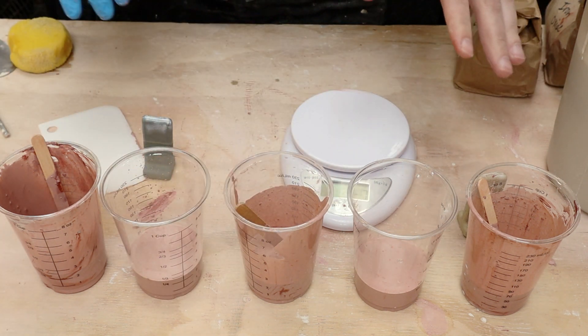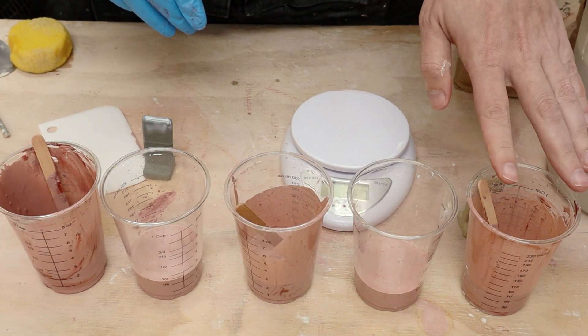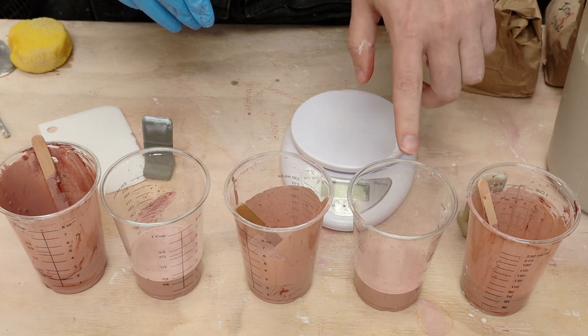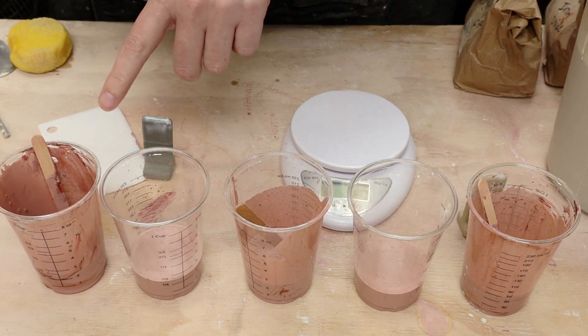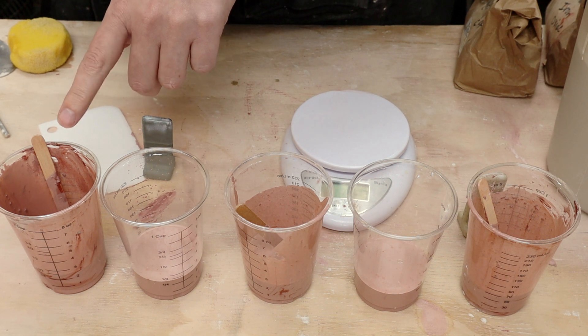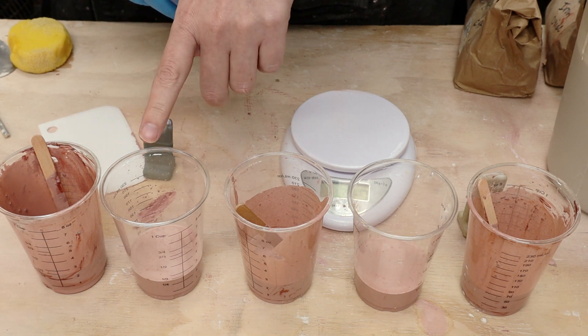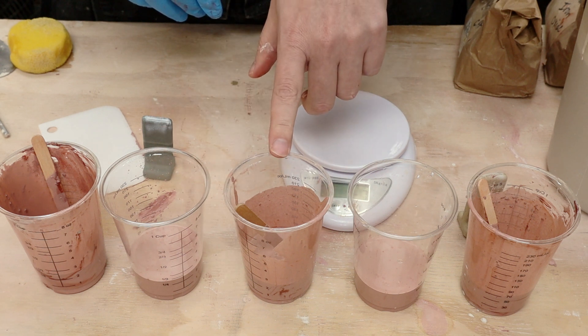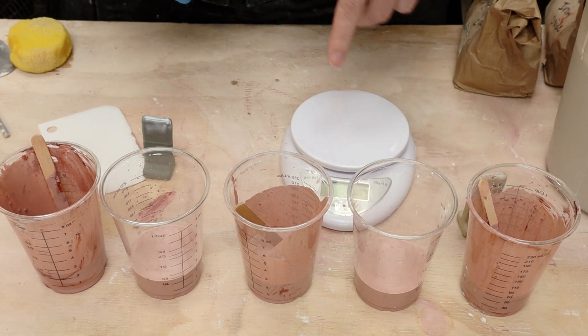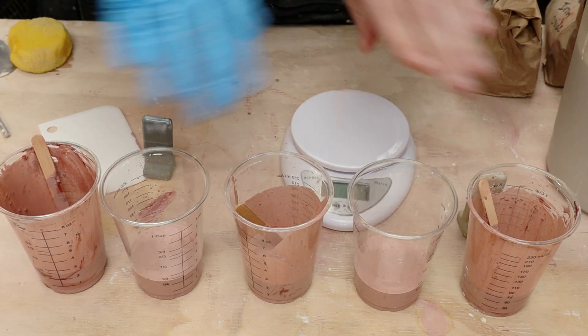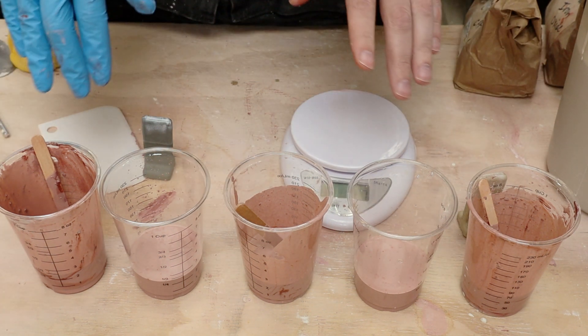So there's the last one. So now we have a blend from zero parts cobalt, 0.25, 0.5, 0.75 to one. And for the iron oxide, nine parts, 9.25, 9.5, 9.75, 10. So we have all these up. Time to slip cast them.